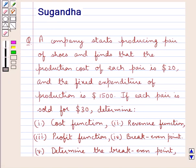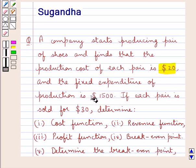Hello and welcome to the session. In this session we discuss the following question: A company starts producing pairs of shoes and finds that the production cost of each pair is $20 and the fixed expenditure of production is $1500.